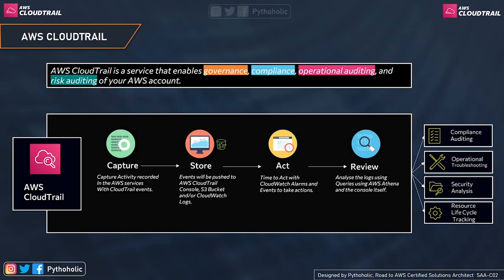Just like CloudWatch has four pillars, CloudTrail also has four pillars: Capture, Store, Act, and Review. First, we capture the activity that takes place in AWS services via CloudTrail events — these are our data points from your AWS account. Second, we store the CloudTrail events in dedicated S3 buckets or CloudWatch Logs. Third, we act by using CloudWatch Events and alarms to take actions based on those data points.